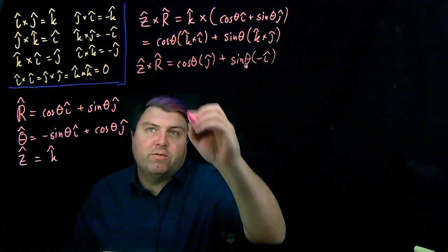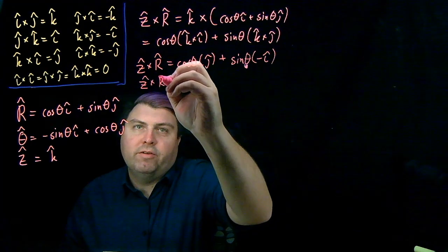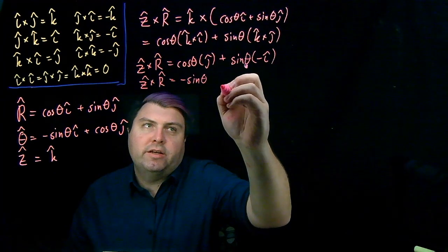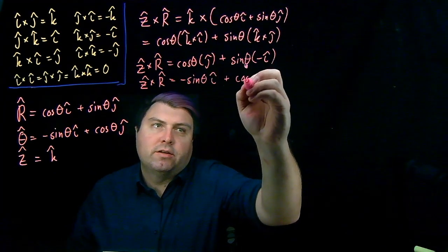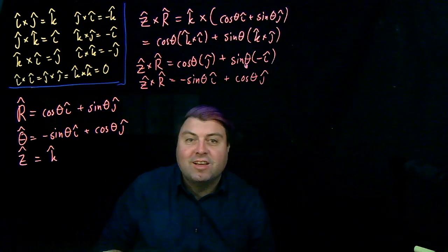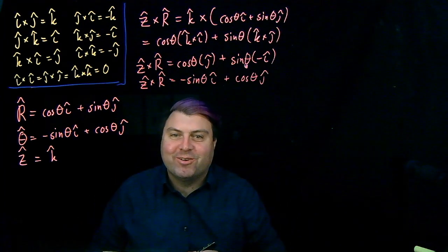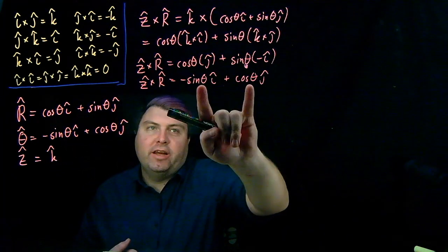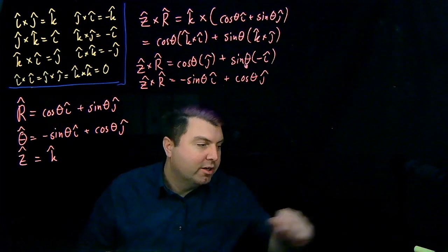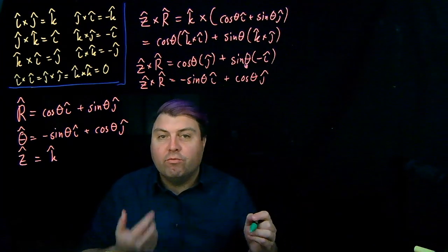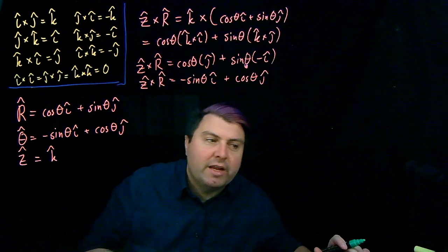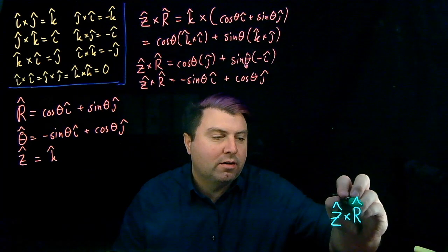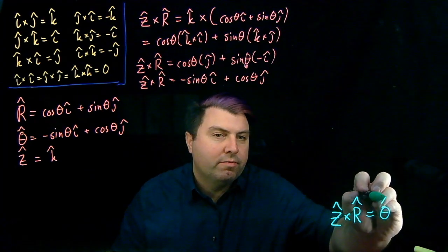After a tiny bit of rearranging, we get −sinθ î + cosθ ĵ. Have I seen this before? Is this somewhere on the screen? Absolutely — that's θ̂. So now I have one of the rules: Ẑ × R̂ = θ̂.